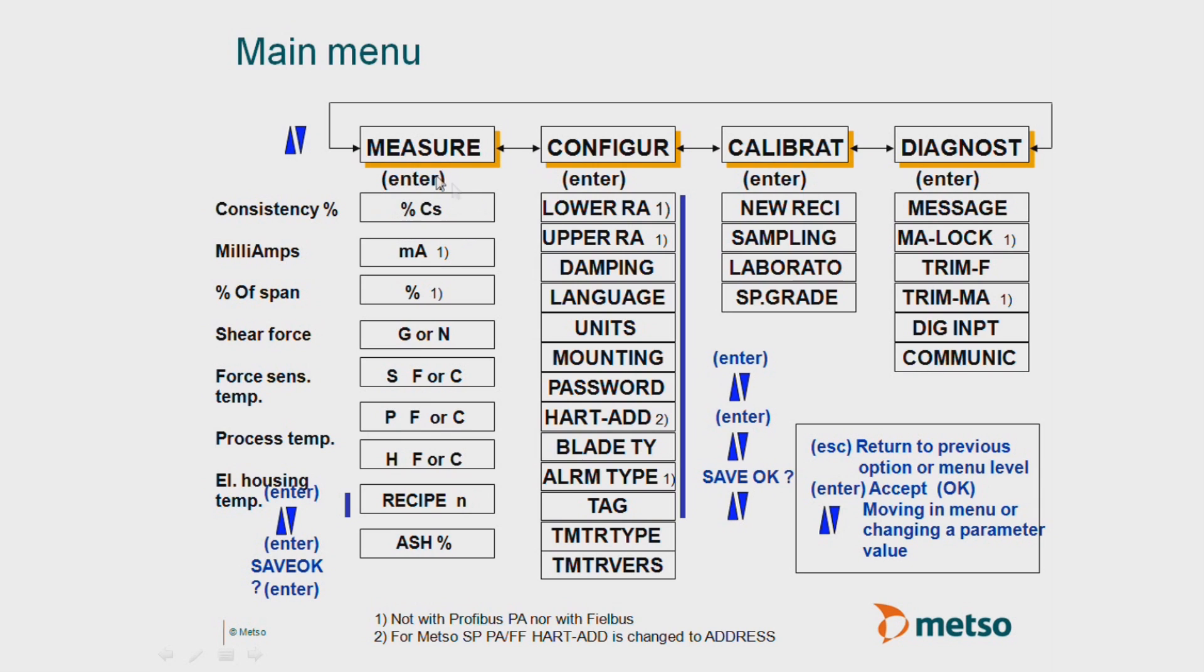If you want to arrow down here on the keypad, you can get the output in milliamps. You can see percent of span, you can see shear force in grams, you can view temperatures also.